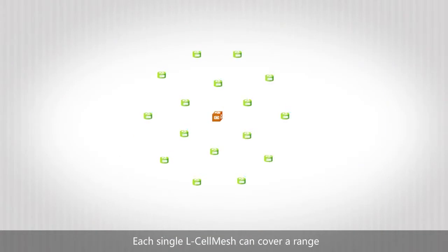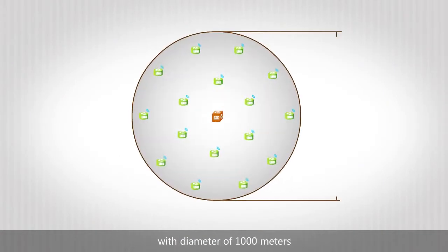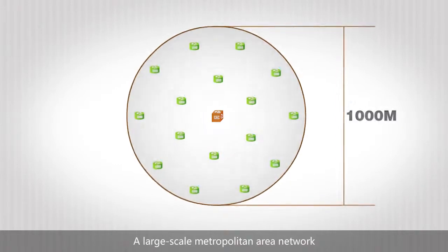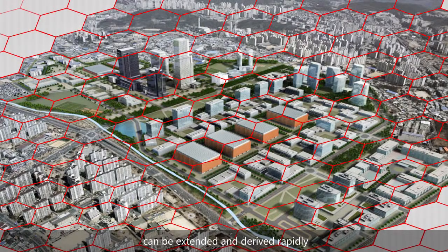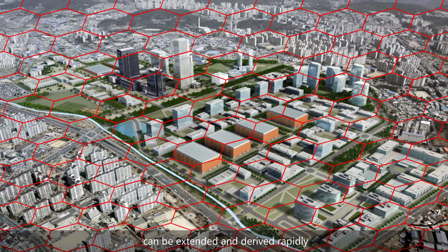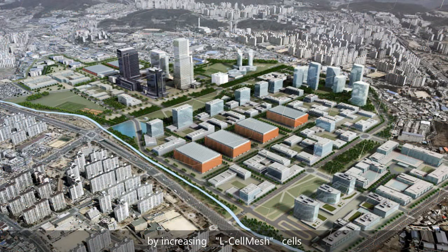Each single L-Cell Mesh can cover a range with a diameter of 1000 meters. A large-scale metropolitan area network can be extended and derived rapidly by increasing L-Cell Mesh cells.